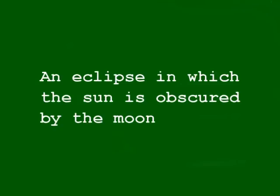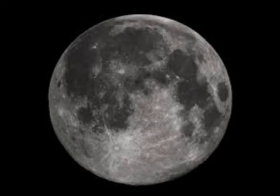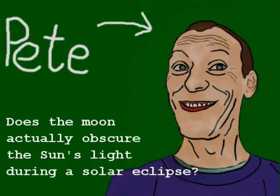An eclipse in which the sun is obscured by the moon. Now, according to this definition, it seems that the obscuring of sunlight is caused by the moon. But my question to you is: does the moon actually obscure the sun's light during a solar eclipse?